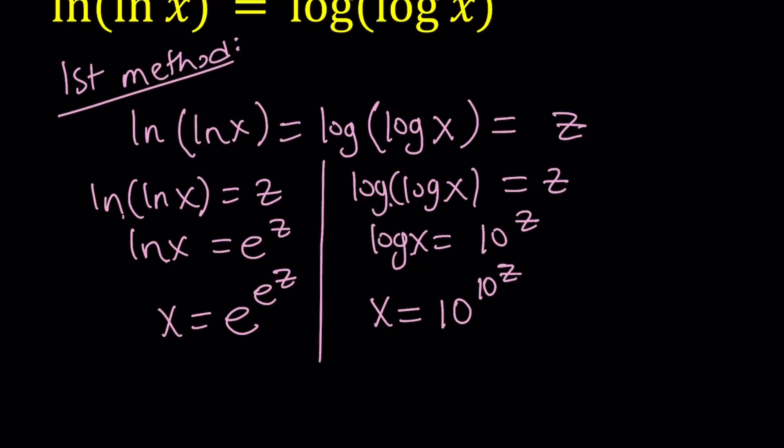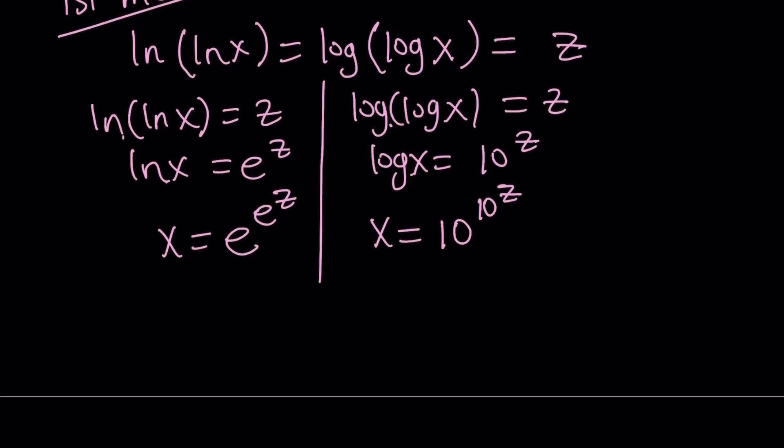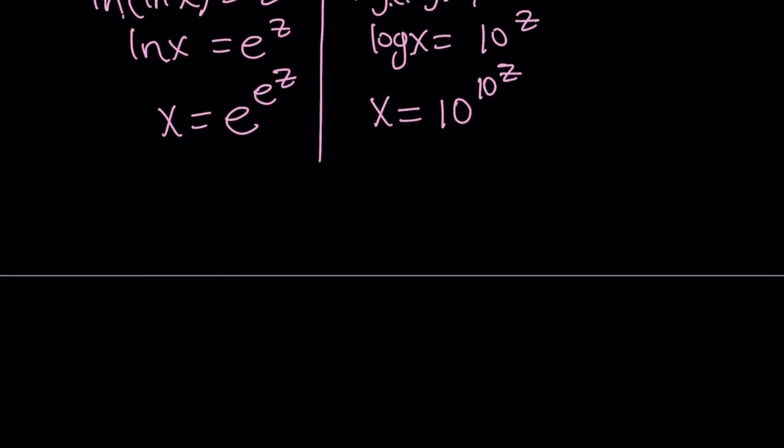So we kind of have like a really interesting equation where it's kind of like e to the power e to the power something, and then 10 to the power 10 to the power the same thing equals the same thing. Kind of like weird, but the answer is weird anyways. So let's go ahead and proceed by setting these equal to each other.